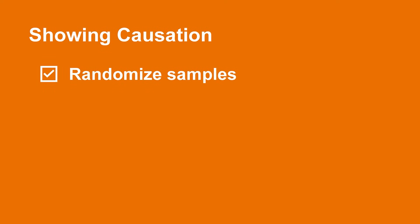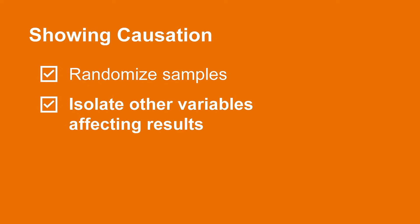If showing causation is our end goal, there are a few things we can do. One is to always make sure we are randomizing our samples as best we can. This will hopefully cause any other underlying variables to cancel each other out and not taint our data and results. Another way is to isolate any other variables that we suspect might also be affecting our results. If someone thinks that a big healthy breakfast is the true cause of the higher test scores, we could run a separate experiment to see if we find a correlation there. If we find that it is correlated, we haven't proven anything, but we have introduced some doubt as to the true cause and might need some further investigation. But we may find no correlation at all and be able to eliminate that explanation entirely.